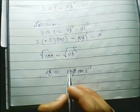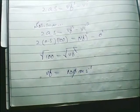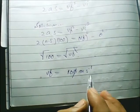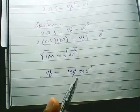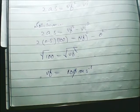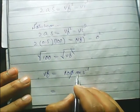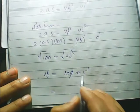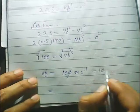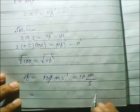Now convert 10 meter per second into kilometer per hour, because the answer is required in kilometer per hour. We have to convert meter to kilometer and second to hour.